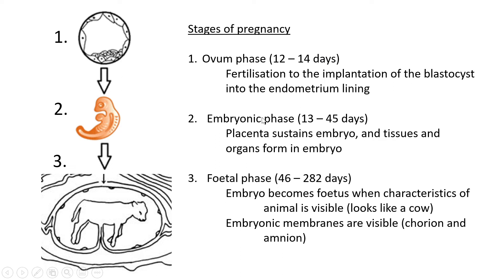The second is the embryonic phase, lasting from about day 13 to day 45. This is when the placenta forms and sustains the embryo. Within the embryo, tissues and organs are starting to form — the eyes, hands, digestive tract, stomach — all the organs on the inside are starting to develop. The embryo is starting to become some kind of animal.